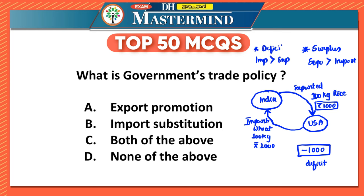When imports are more than exports, we have a deficit. If the country has to grow, it should be promoting exports. So the first statement — export promotion — seems correct. The second option is import substitution: rather than importing wheat, if we are substituting that by growing it domestically, we need not import it, and the deficit will not occur.